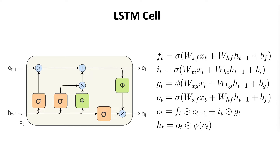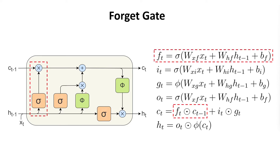The first gate in the LSTM cell is the forget gate, and what it basically does is forget an amount of the information that was transmitted from the previous step. In the diagram it is shown in this part of the cell. The sigma symbol represents this equation — we take as input the current embedding and the previous hidden state, and we multiply each of those with a weight matrix, which are different for each of the two inputs.